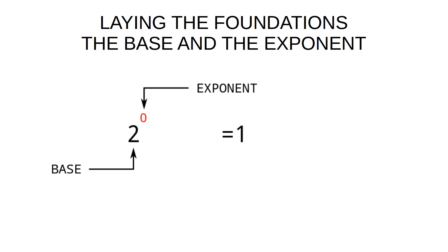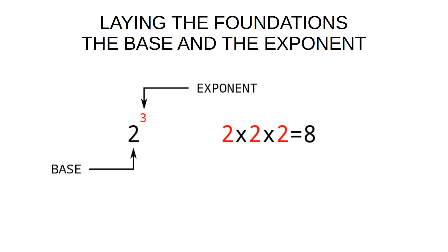Now if we look at binary — binary of course has a base of two, because we only have two digits, zero and one. So two to the zero is one, because it follows the rules. Two to the one is two. Two to the two is four. And two to the three is eight. So we have effectively the ones column, the twos column, the fours column, and the eights column — instead of the ones, tens, hundreds, and thousands.